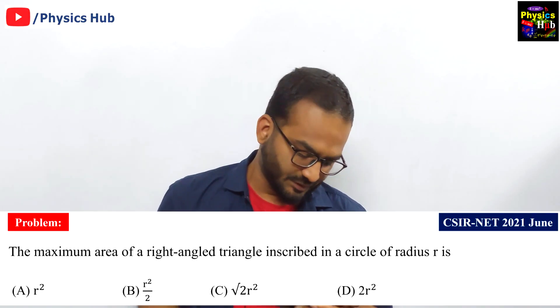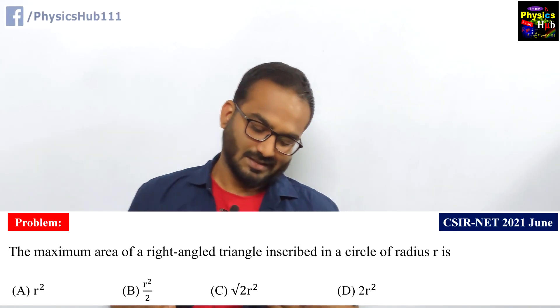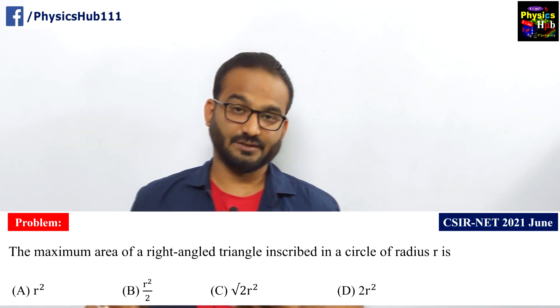Okay, so let us consider another problem from CSIR-NET June 2021 examination and this is from general aptitude section. The question reads like this: the maximum area of a right angled triangle inscribed in a circle of radius r.